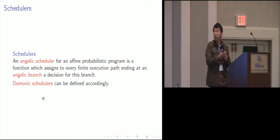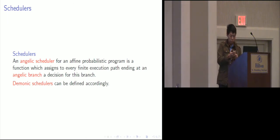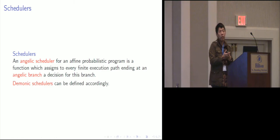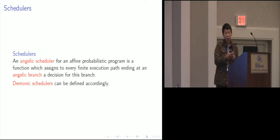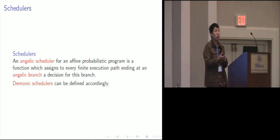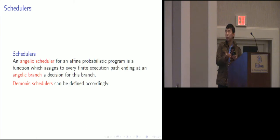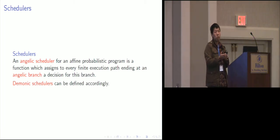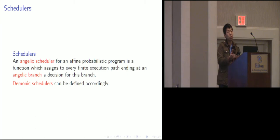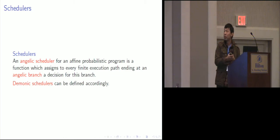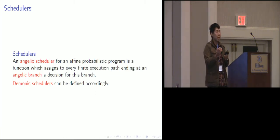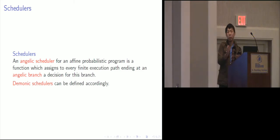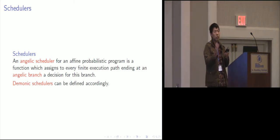As we have seen, we have non-determinism in our programs. In order to specify the semantics of such programs, we need the notion of a scheduler. Intuitively, a scheduler is a function which maps every finite execution of a program to a choice of demonic or angelic branch. A scheduler is angelic if it makes decisions at angelic branches, and it is demonic if it makes decisions at demonic branches.